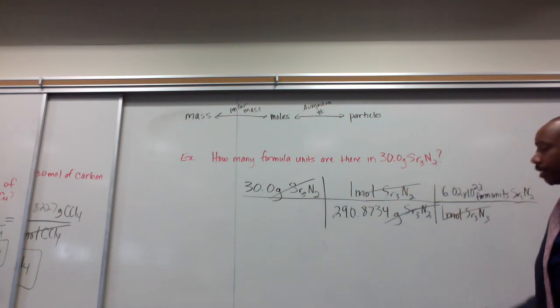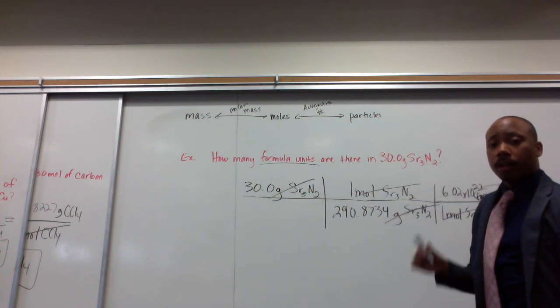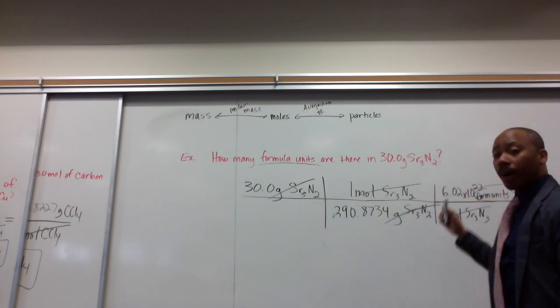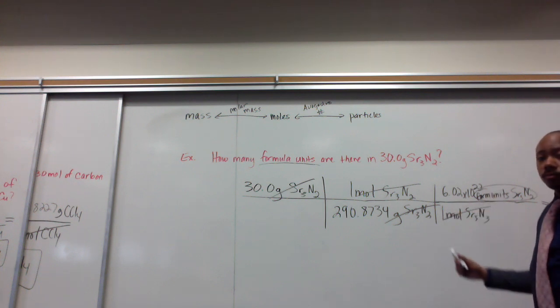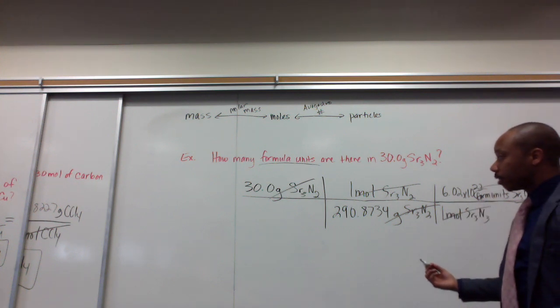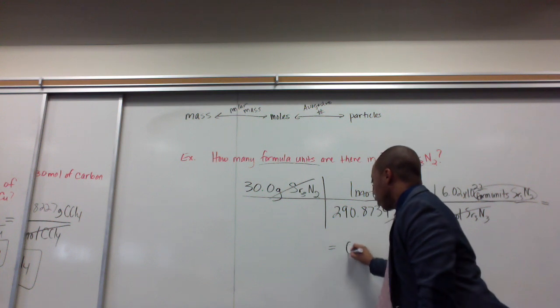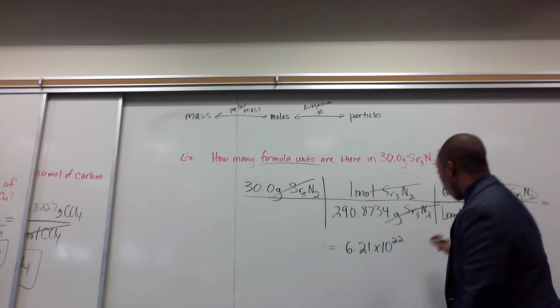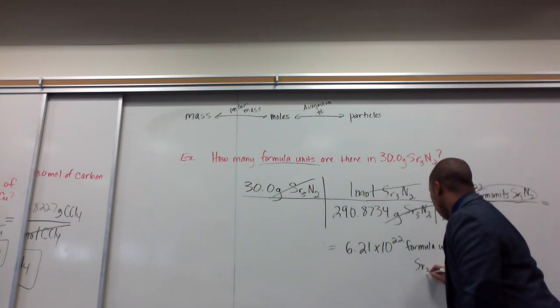Now that I have formula units of strontium nitride, which is what I wanted in my problem here, I can solve. Now I multiply on the top, 30 times 1 times Avogadro's number. Then I divide by what's in the denominator, 290.8734 divided by 1, and 1. So, once I do that, what I get is 6.21 times 10 to the 22nd, it's formula units of strontium nitride.